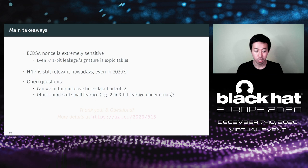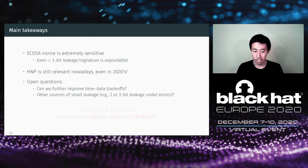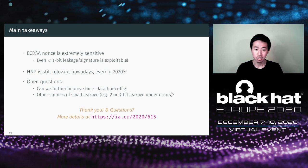After our analysis, we identified multiple interesting open questions. Can we further improve the time-data trade-offs? Even though we managed to attack with 1-bit leakage, it still required at least millions of signatures. If a more efficient algorithm giving better trade-off curves can be found, we might further reduce the input data complexity of Bleichenbacher's attack. Also, we would like to know whether there are other sources of small leakage allowing an attacker to learn 2- or 3-bit leakage under some errors — in those cases, Bleichenbacher's attack works very effectively. Thank you very much for your attention. If you have any questions, we are happy to answer. You can find our paper at the URL shown.